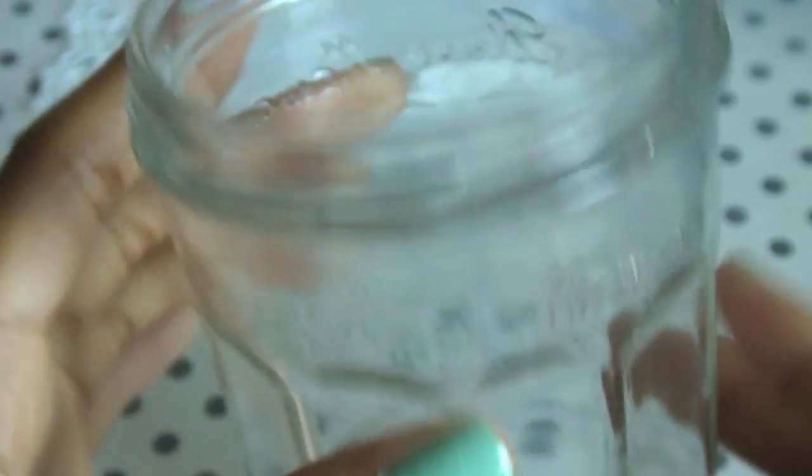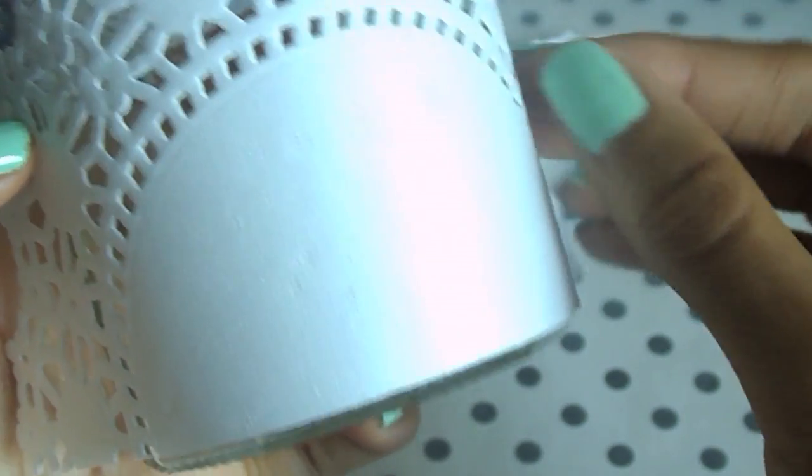So now you just want to take your doily and see if it's the size that you want for your jar and if it's not you can just cut a little more of it.